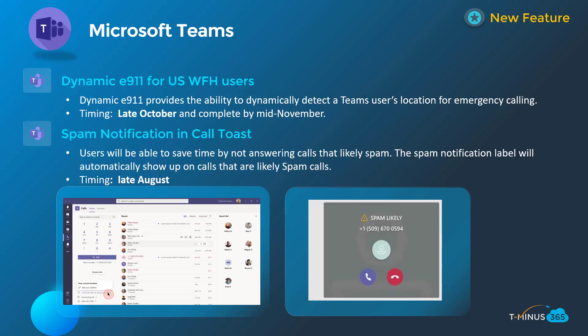These next two are only applicable if you're using VoIP or PSTN services with Microsoft Teams. Dynamic E911 for US work-from-home users gives you the ability to dynamically assign a user's current location as their emergency 911 address within their Teams environment. It will ask the user for consent to grab their location and store it dynamically. Note that this is not available for Business Voice users — it's only for enterprise plans like E3 with phone system and PSTN calling.